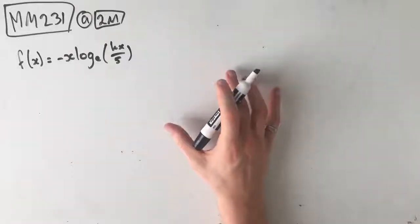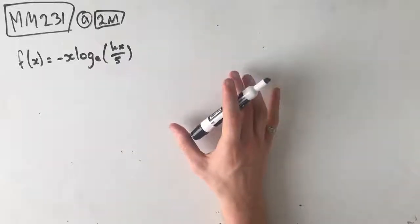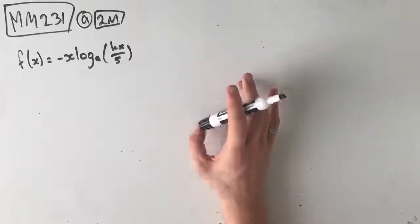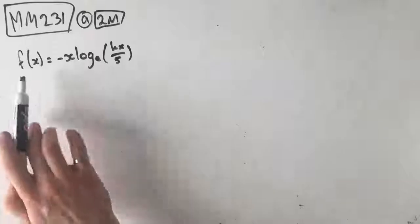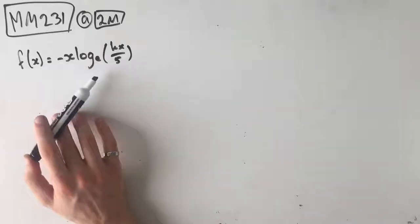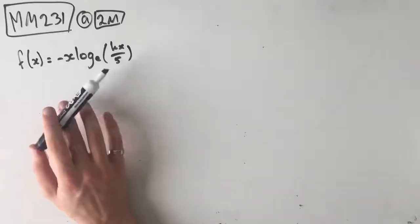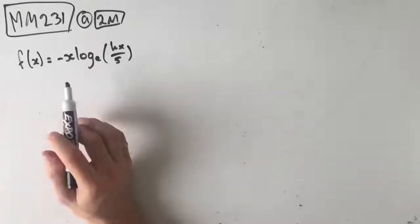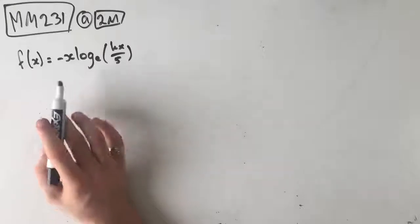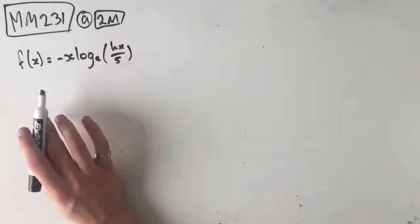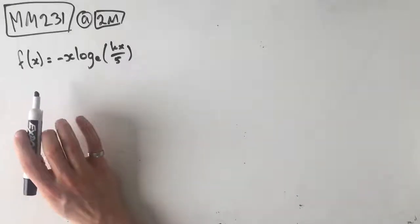Welcome to question MM231 of the Maths Methods Fortify study guide. We've got the function f(x) equals negative x times log base e of kx on 5. Our first part asks us to find the x-coordinate of the stationary point of the graph of f in terms of k.